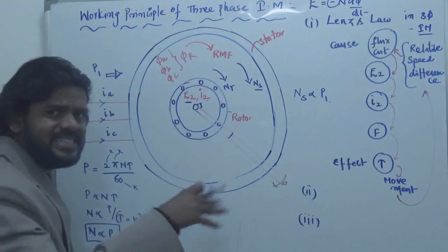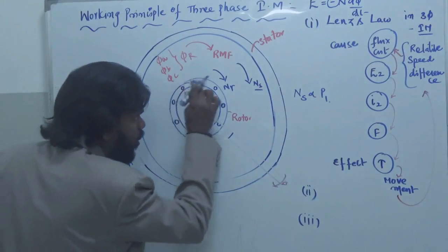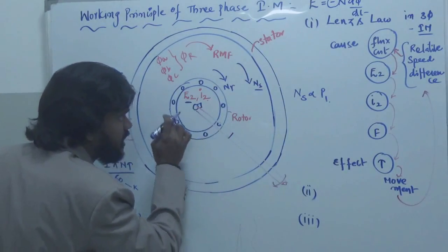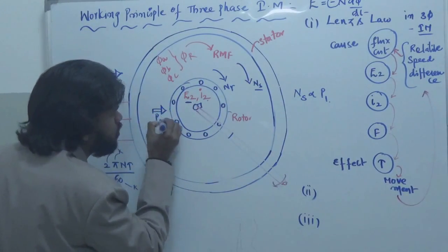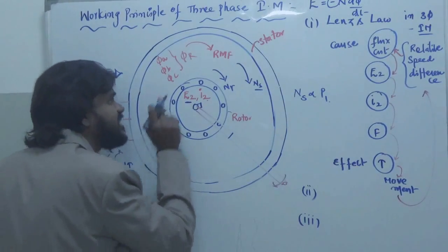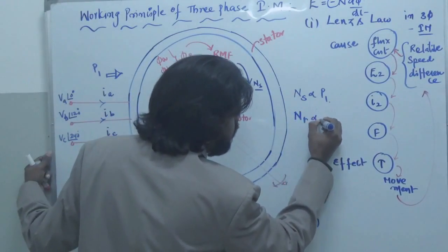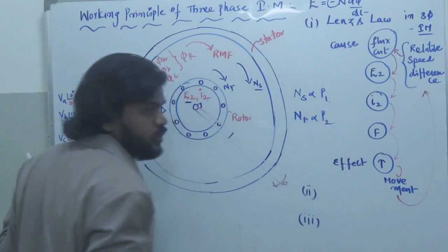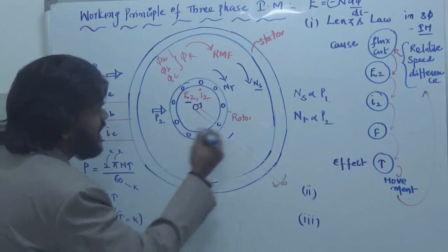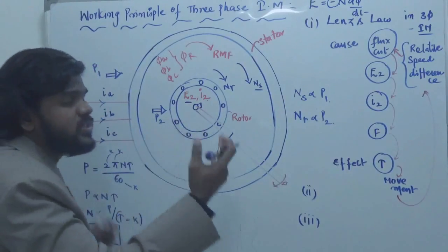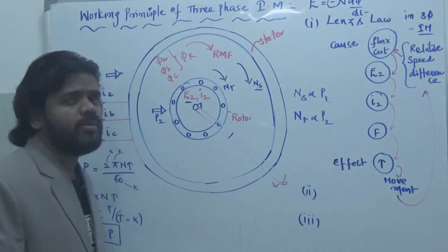P1 is the input to the stator winding and Ns is the stator flux speed. Now, the power input to the rotor is P2, and this power is the reason for Nr. So Nr is proportional to P2. Now, which is the higher value — P1 or P2?